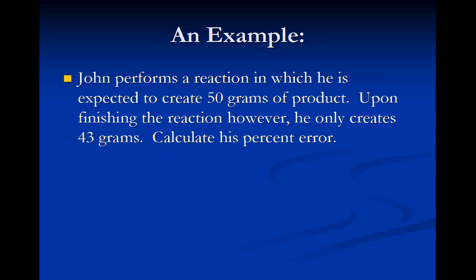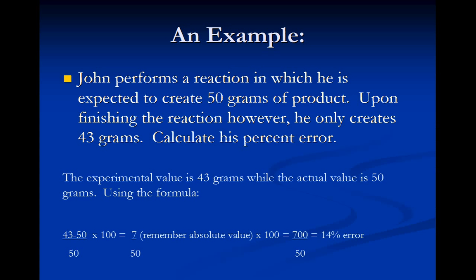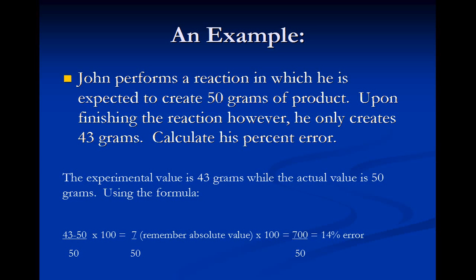Let's look at an example. John performs a reaction in which he is expected to create 50 grams of product. Upon finishing the reaction, however, he only creates 43 grams of product. Calculate his percent error. We need to decipher what we have: he's expected to create 50 grams, so that is the actual value. Our experimental value, which is what we got, is 43 grams. Using the formula: |43 minus 50| over 50, which gives us 7 over 50. Times 100% gives us 700 over 50, and when you work that out, you get a 14% error.